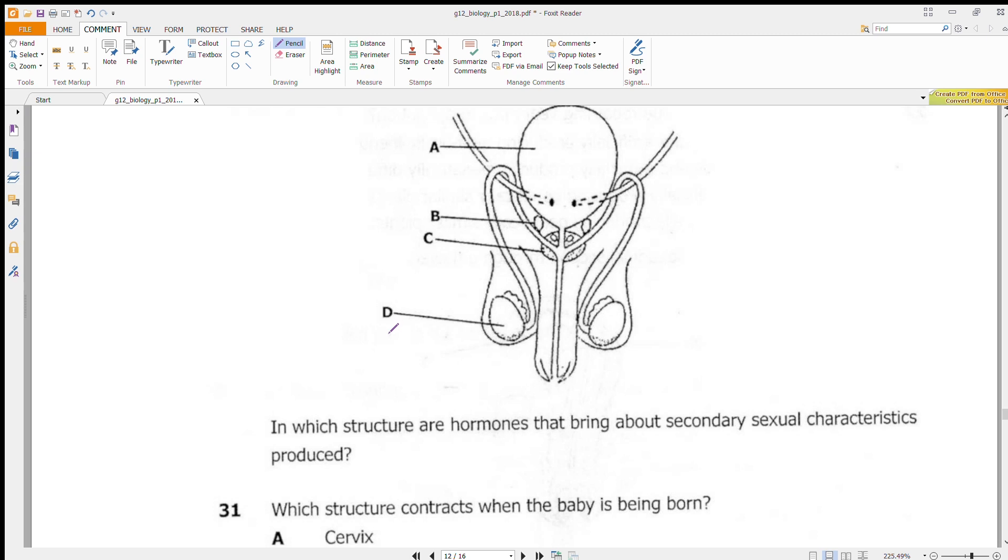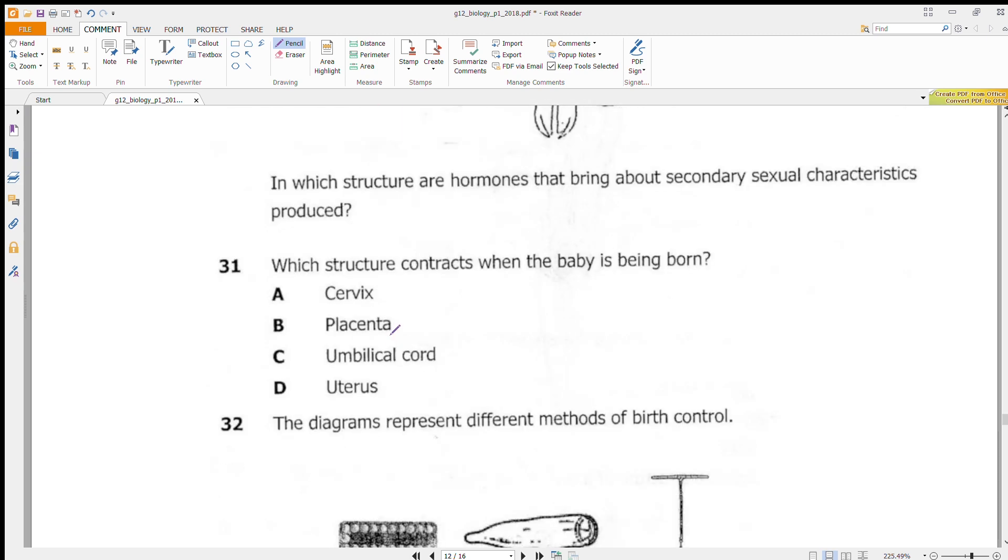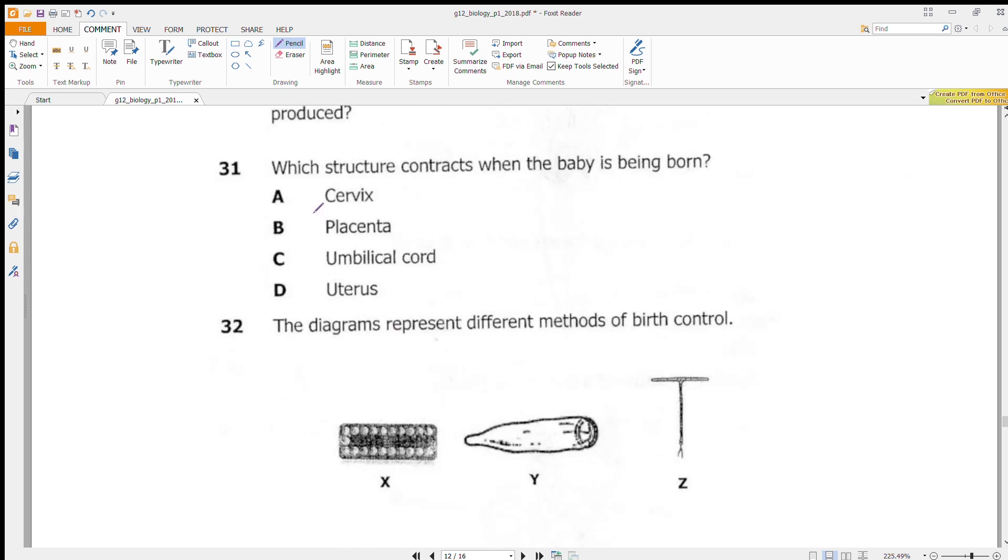Question 31 is saying which structure contracts when the baby is being born. Usually the muscle of the stomach contract, so it's the uterus which contracts. The umbilical cord doesn't contract, the placenta is just passed during birth, and the cervix actually widens during birth to allow the child to pass. So the answer here is D.